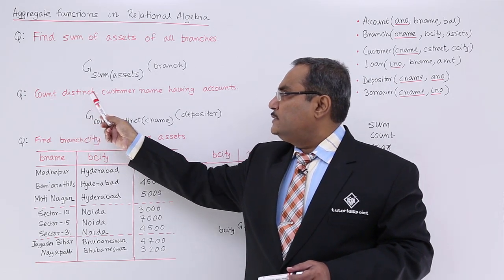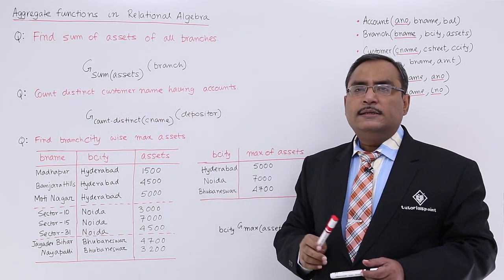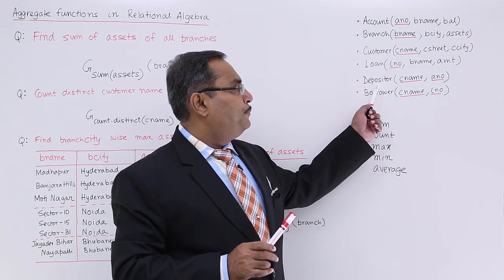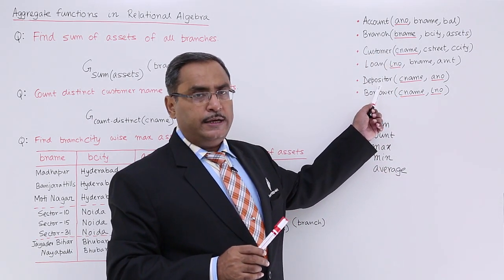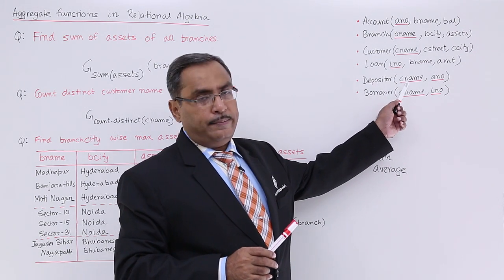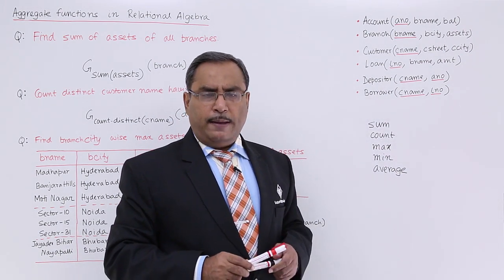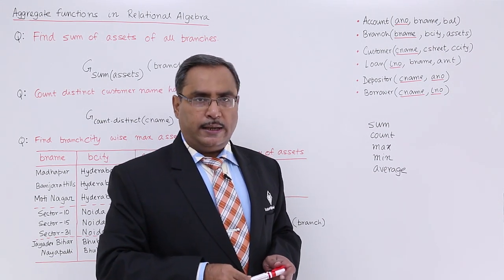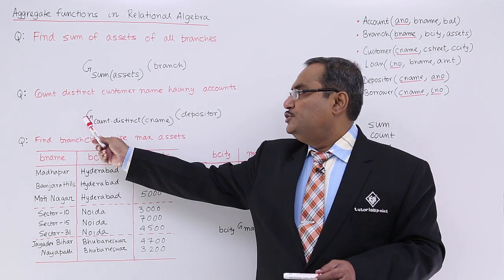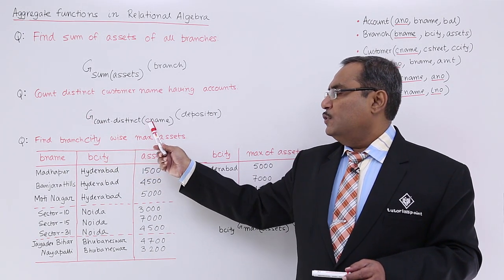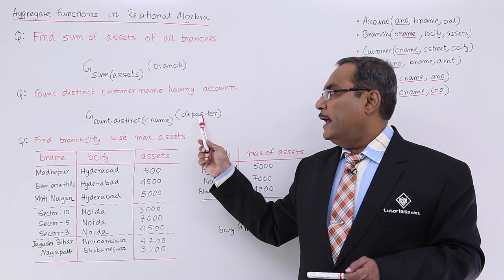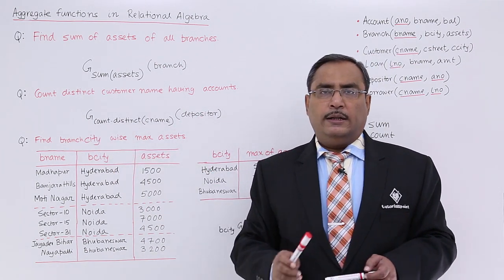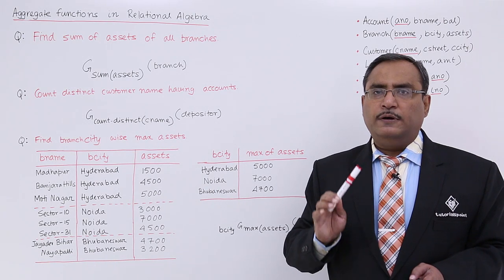The next query is: count distinct customer names having savings bank accounts. The depositor relation gives the idea of which customer name is associated with which account. A person can have multiple accounts, but we require the distinct customer names. So, G count-distinct operated on customer name, applied on the depositor relation, gives us the distinct count of customers.